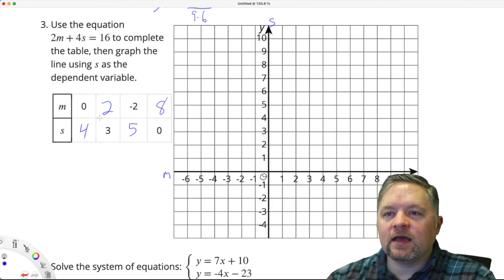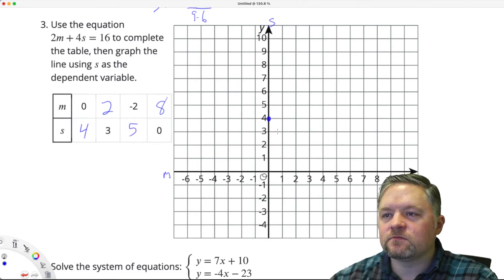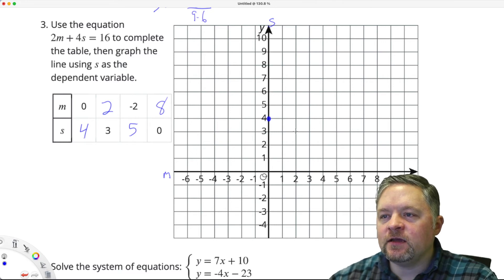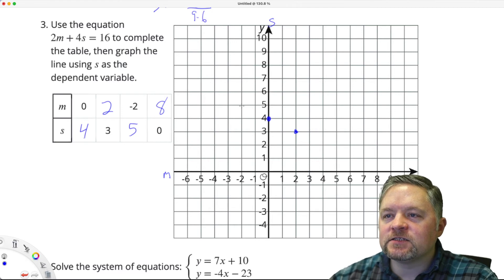Okay, plot these on the graph. If M is 0, S is 4. If M is 2, S is 3. If M is negative 2, S is 5.